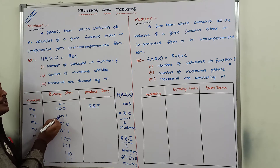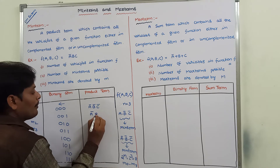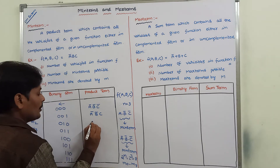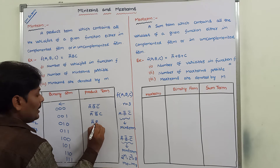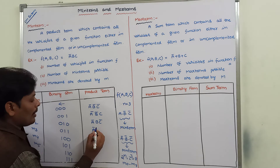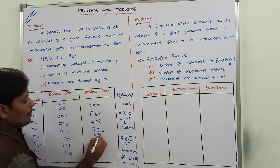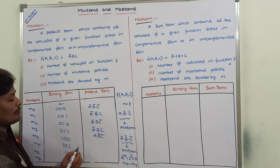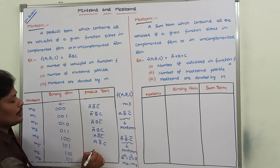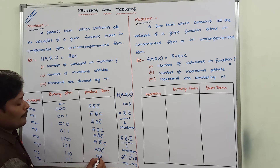So m0 (000) = Ā·B̄·C̄. m1 (001): A value 0 means Ā, B value 0 means B̄, C value 1 means C — so Ā·B̄·C. m2 (010): Ā·B·C̄. m3 (011): Ā·B·C. m4 (100): A·B̄·C̄. m5 (101): A·B̄·C. m6 (110): A·B·C̄. m7 (111): A·B·C.